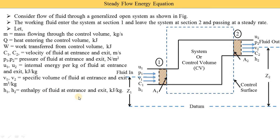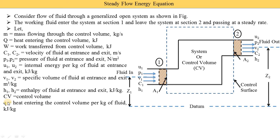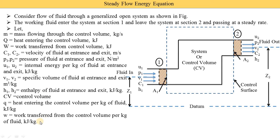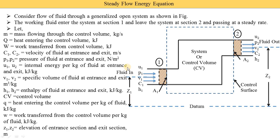H1 and H2 are the enthalpy of the fluid at entrance and exit in kilojoule per kg. CV denotes control volume. Small q is also heat entering the control volume, but per kg of fluid, so its unit is kilojoule per kg — it is capital Q divided by mass. Similarly, small w is work transfer per kg of fluid, obtained by dividing W by mass. Z1 and Z2 are the elevations of the entrance and exit sections, measured in meters.